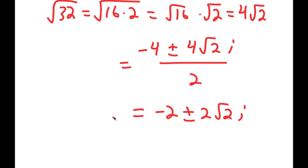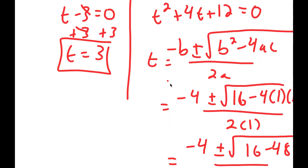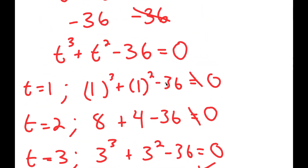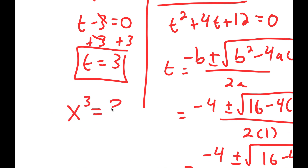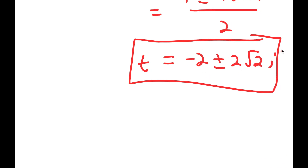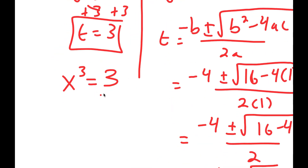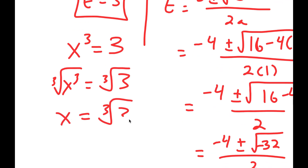So t equals negative 2 plus or minus 2 root 2 i, as well as 3. But remember, we let x to the power of 3 equal t. Since we cannot take a real cube root to produce an imaginary solution, we discard the complex values. The only valid solution is x to the power of 3 equals 3, so taking the cube root of both sides gives x equals the cube root of 3.